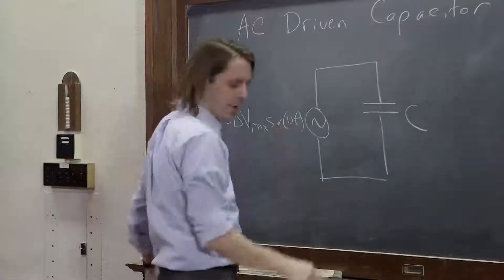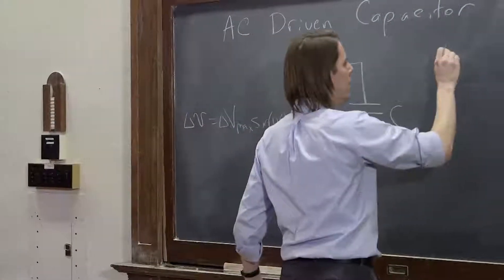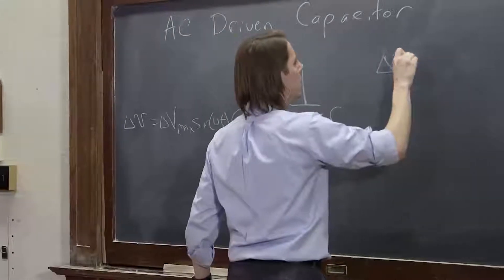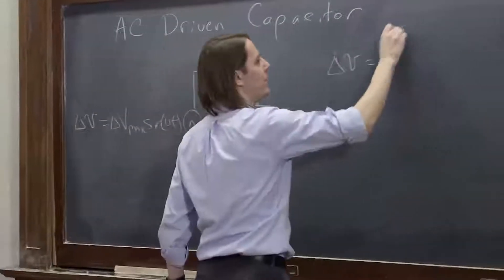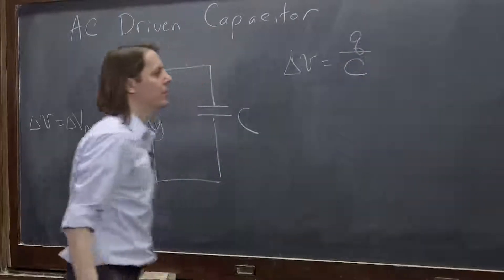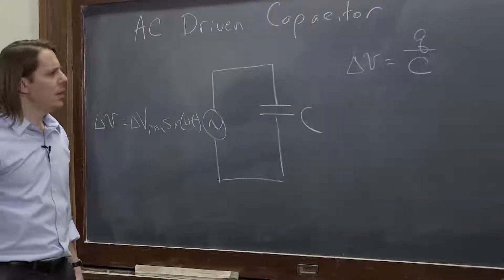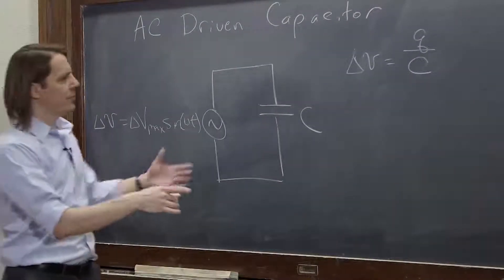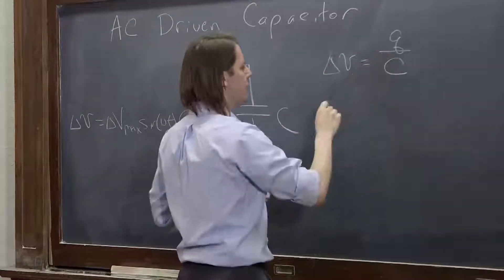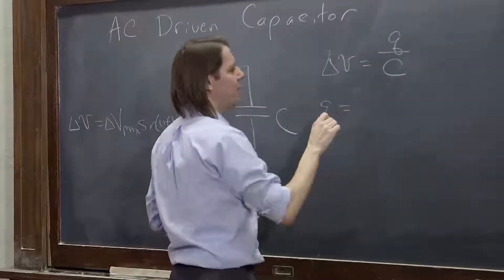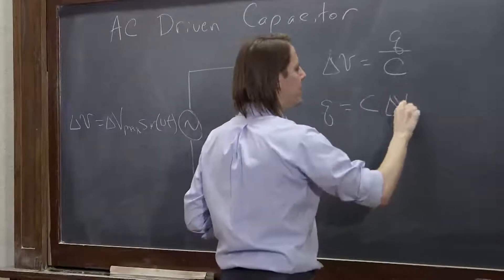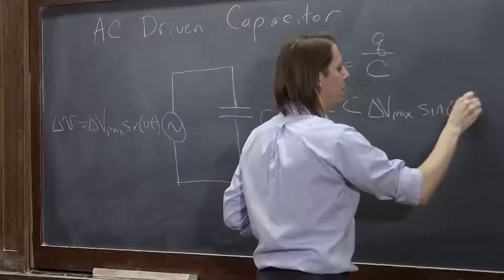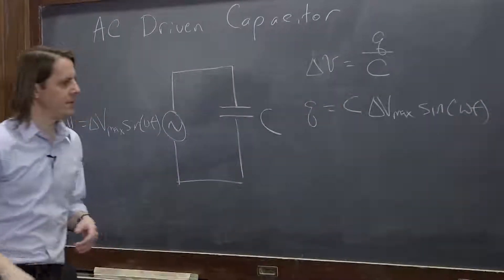Okay, well, the delta V we're applying across the capacitor, we know has to be equal to the charge on the capacitor over its capacitance. So we can start plugging in things. Let's solve for the charge. So Q, the charge on the plates that can vary in time, is now C times delta V max times sine omega T.